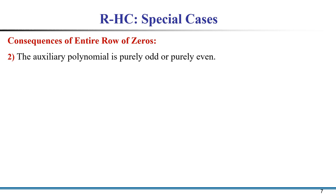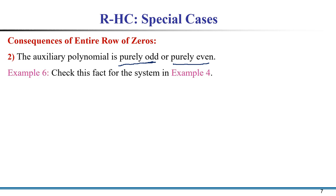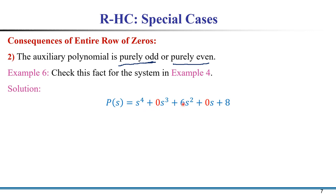One thing to note: the auxiliary polynomial is either purely odd or purely even. In this equation, it is a purely even polynomial because there is no odd-power term — the coefficient of s³ is zero and the coefficient of s is also zero. So this is a perfectly even equation.